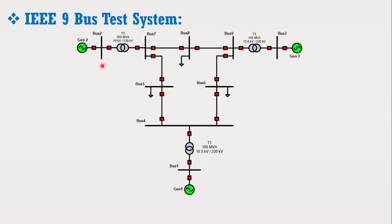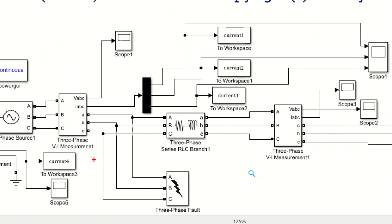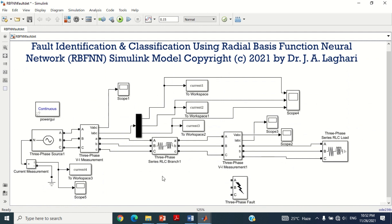If we change the fault ground resistance and again apply all 12 fault conditions at each bus, another 108 input data cases can be obtained. Furthermore, we can vary the fault ground resistance and can generate 1000 input data cases. Coming back to our model, as it is a very small power system model, the main purpose is just to share the idea. Therefore, we can obtain at least 100 plus cases by applying all 12 fault conditions before and after the transmission line position, and by changing the fault ground resistance.